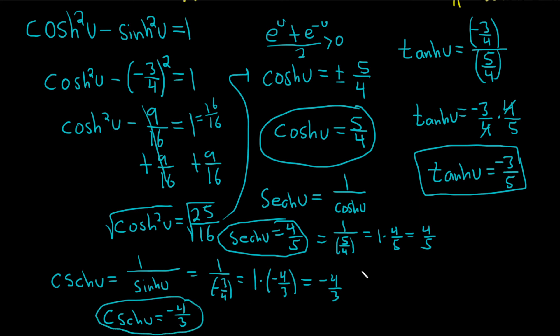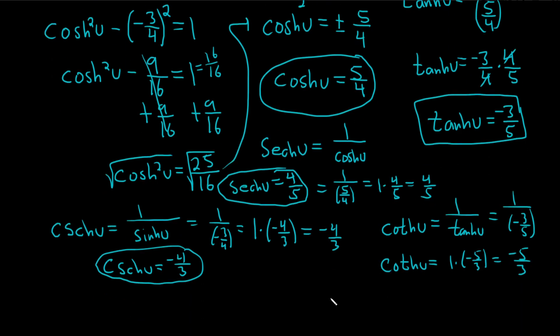And then we just need the hyperbolic cotangent, so we're going to use hyperbolic tangent. So hyperbolic cotangent of u is 1 over the hyperbolic tangent, which is 1 over negative 3/5. So the hyperbolic cotangent of u, it's 1 times the reciprocal, so 1 times negative 5/3, which is negative 5/3. So the hyperbolic cotangent of u is equal to negative 5/3.